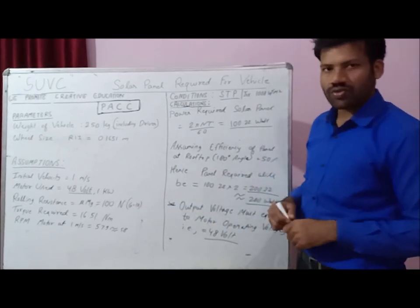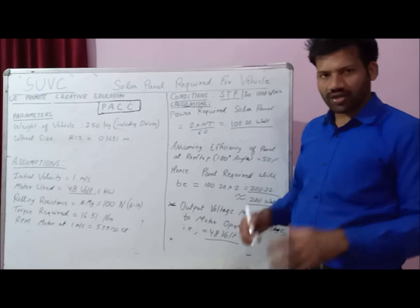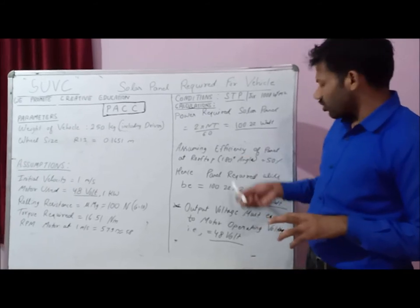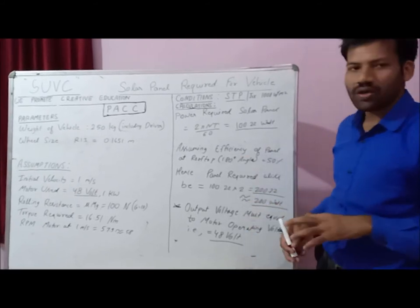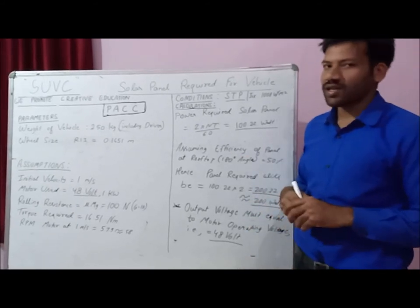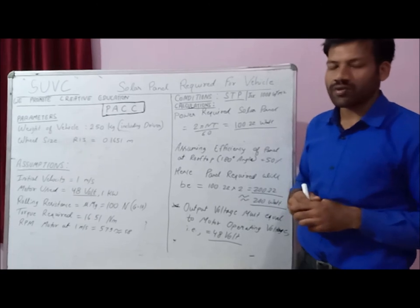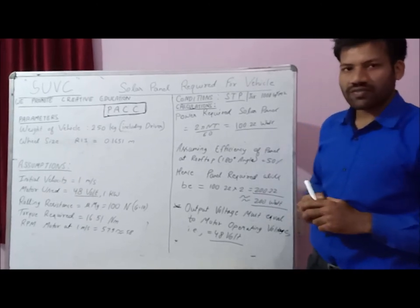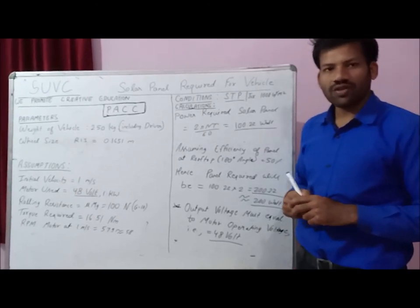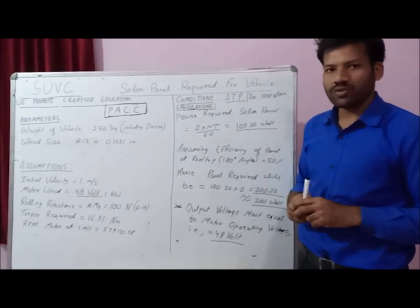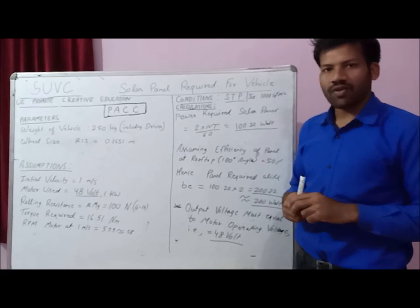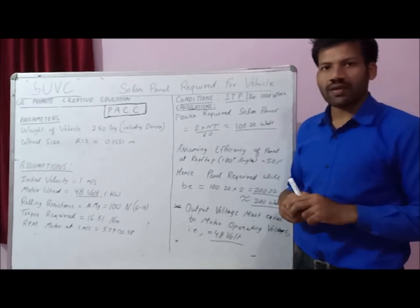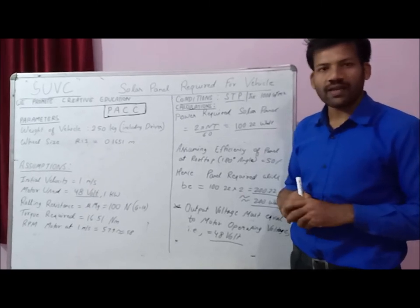So if you choose a 200-watt, 48-volt solar panel based on these parameters and assumptions, your vehicle will definitely run directly on the solar endurance round. Thanks for watching. If you like our videos, please subscribe to our channel for the latest videos and press the bell icon.